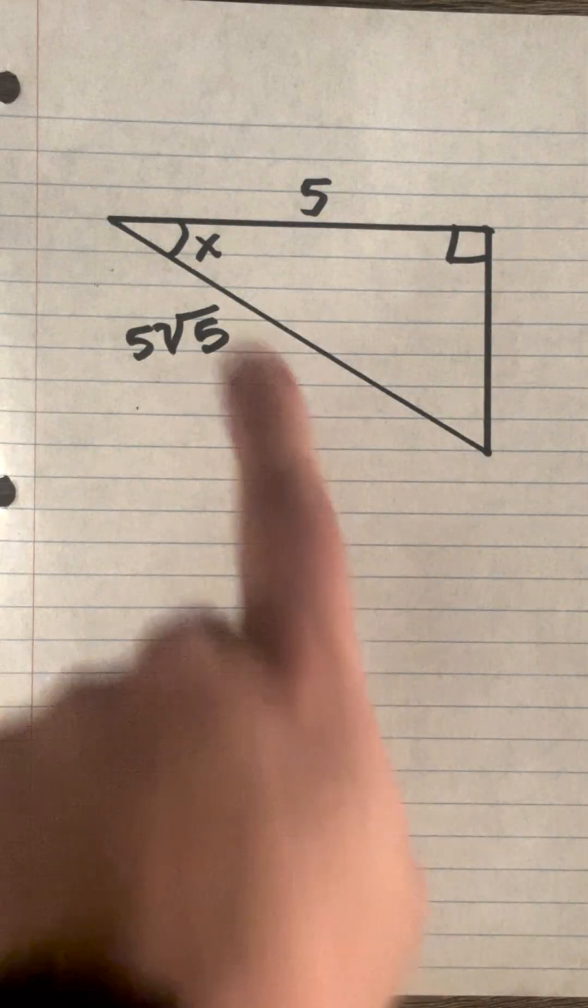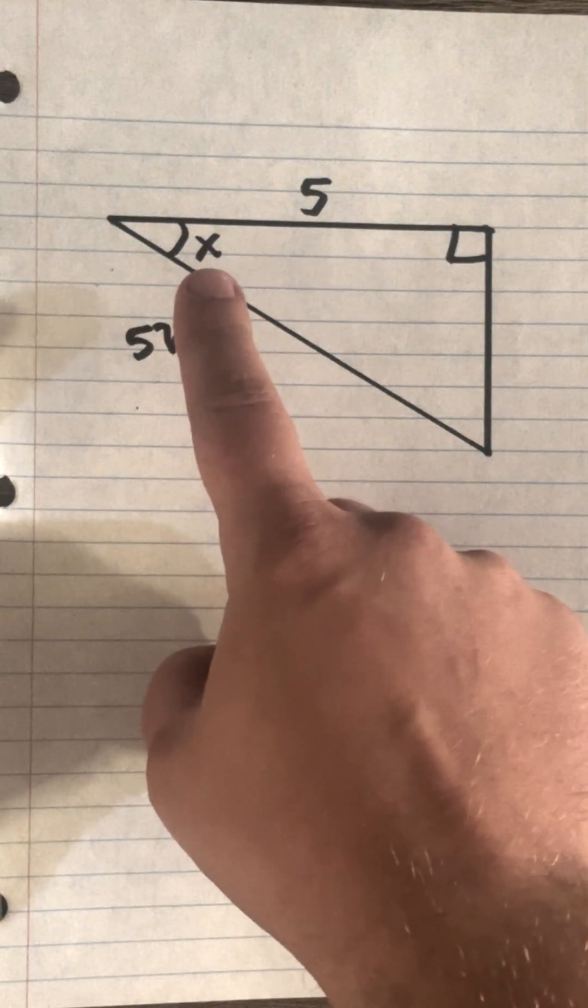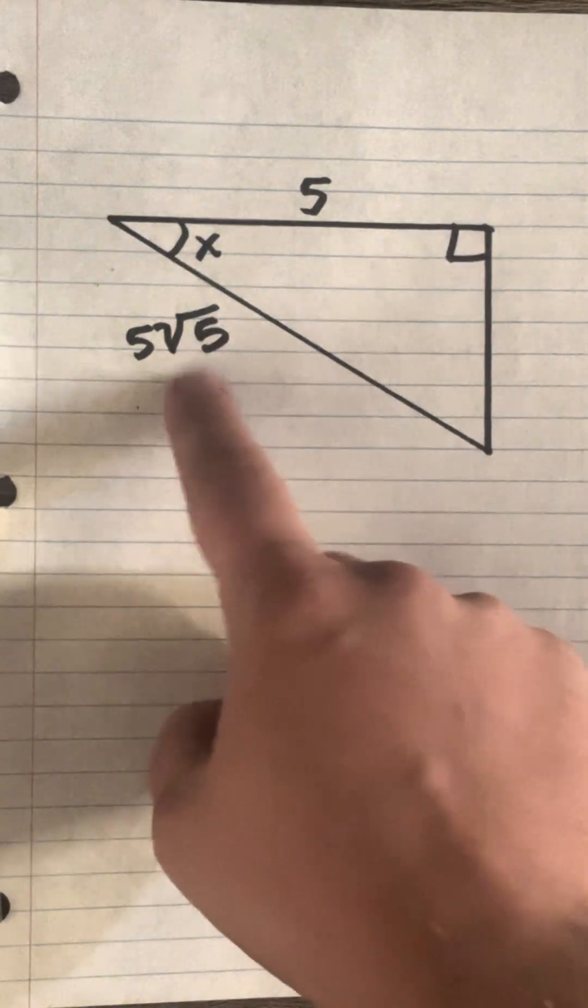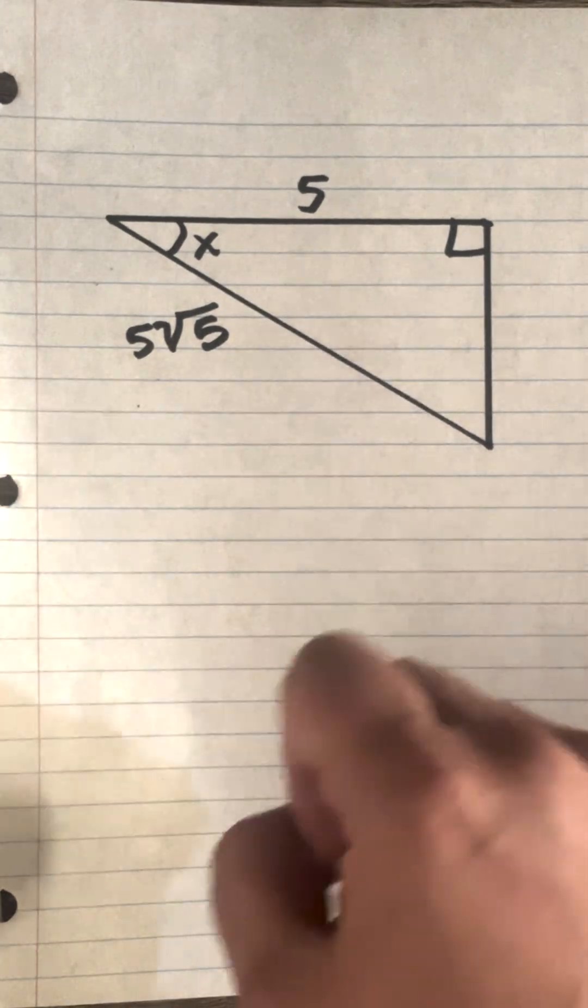We've got a right triangle that we want to solve for x. So if we look at x, we see we have the adjacent and the hypotenuse, which comes out to cosine.